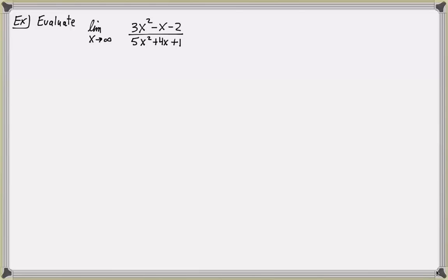Now let's evaluate some limits at infinity. Consider the limit as x approaches infinity of the rational function 3x squared minus x minus 2, all over 5x squared plus 4x plus 1. To evaluate the limit at infinity of any rational function, we first divide both the numerator and denominator by the highest power of x that occurs in the denominator.